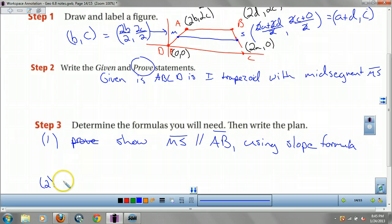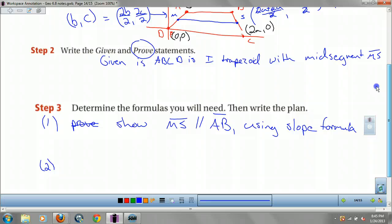And to prove 2, what you're going to have to do, what's that one say about a half? It's half the sum of the base. Show ms equals 1 half AB plus DC. Okay? And you're going to do that by using the distance formula. Okay?